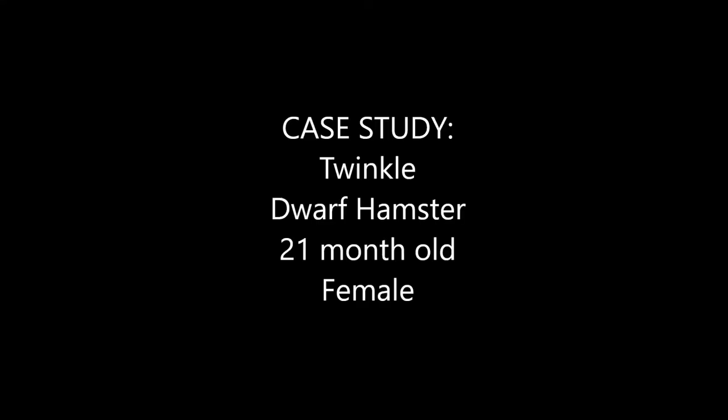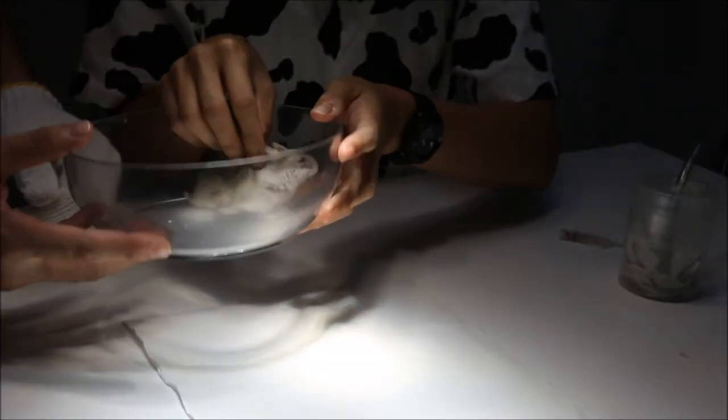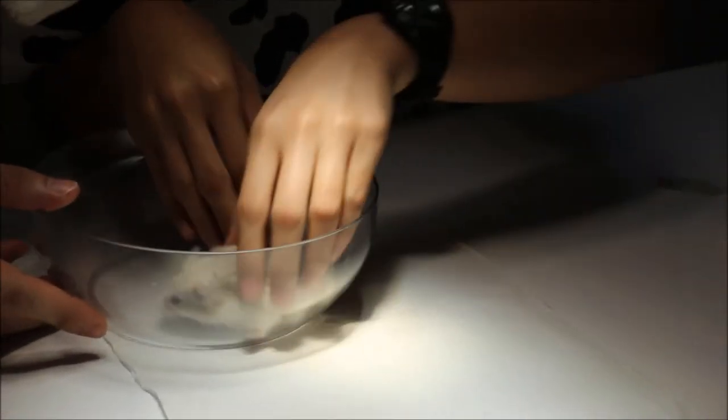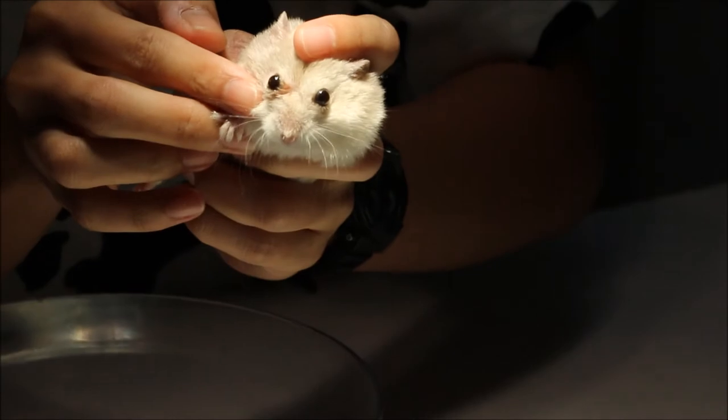So before getting into the fluorescent test, let's go through the case of this hamster. This is Twinkle, a 21-month-old female grey dwarf hamster which came in with a complaint of scratching on the right eye. The vet also sees there's hair loss on the upper and lower eyelid of the right eye.